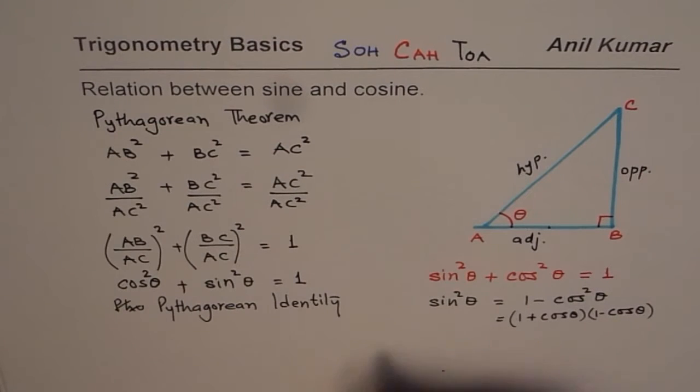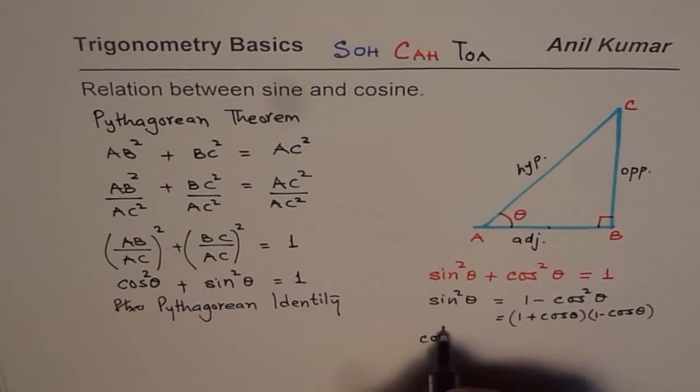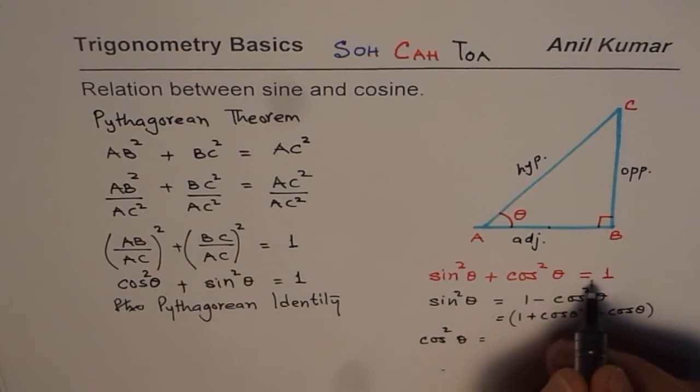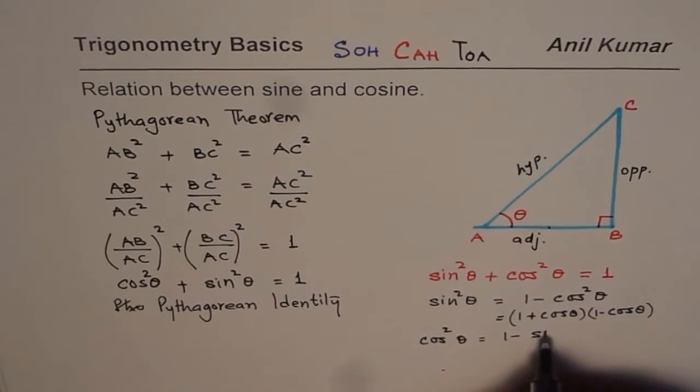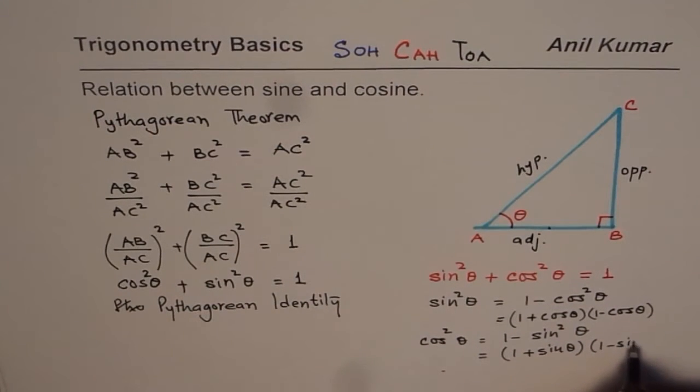Similarly we could write cos²θ as 1 minus sin²θ and that could also be written as (1 + sin θ)(1 - sin θ).